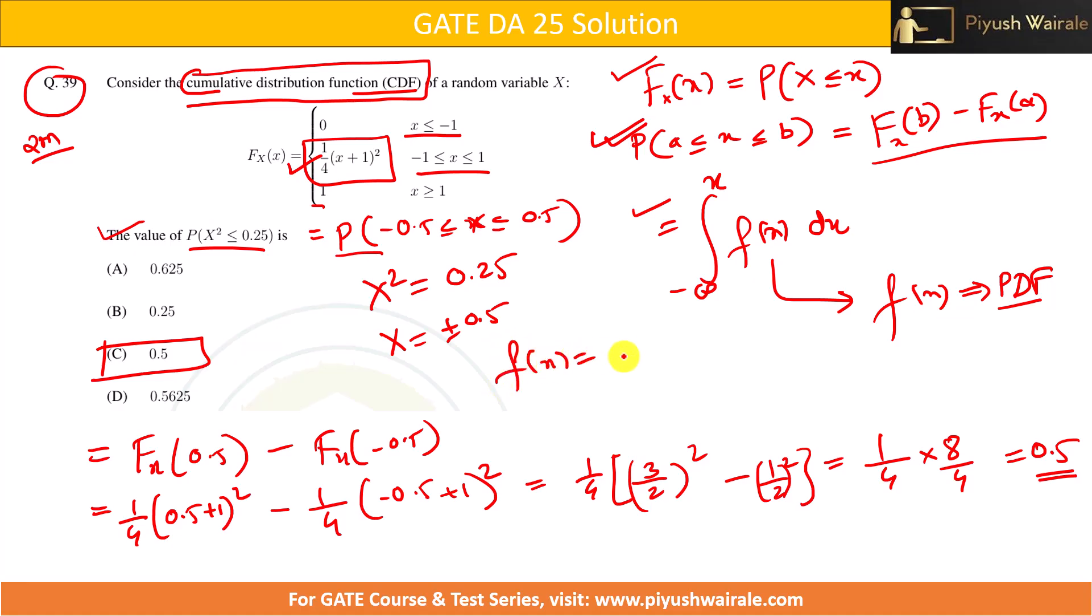This is basically a PDF and how to get PDF from CDF. So f(x) will be equal to derivative of CDF. This is how we are going to get the PDF. You need to remember this point as well. And one more important point: the value of CDF at median, let's say for example m, is equal to 0.5.